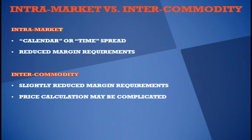The other spreads are intercommodity. These are related markets, but there are some margin benefits — some may have more, some actually may have less. The price calculation on intercommodity spreads can be a little different. For example, if you're trading crude oil versus heating oil, crude oil is priced in dollars per barrel, where heating oil is priced in cents per gallon, so you'll have to do the conversion over to dollars per barrel. The exchange websites have the formulas to do so, or you can call your broker and they should be able to help you out.